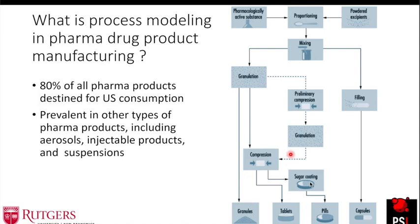After granulation, there is compression, pre-compression, and sometimes sugar coating is added to improve the taste of the tablet. So there are many unit operations. When it comes to process modeling, you can imagine all these boxes as one reactor. You need a mathematical framework for describing each unit operation in order to understand the entire process completely.